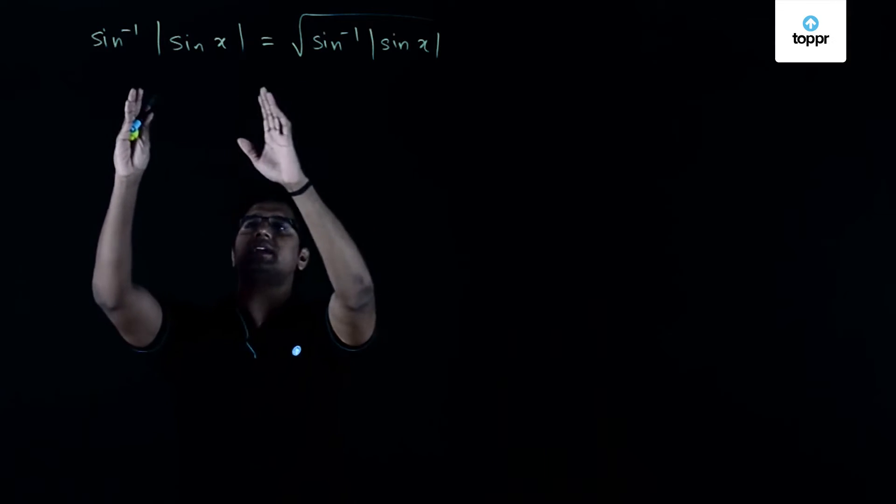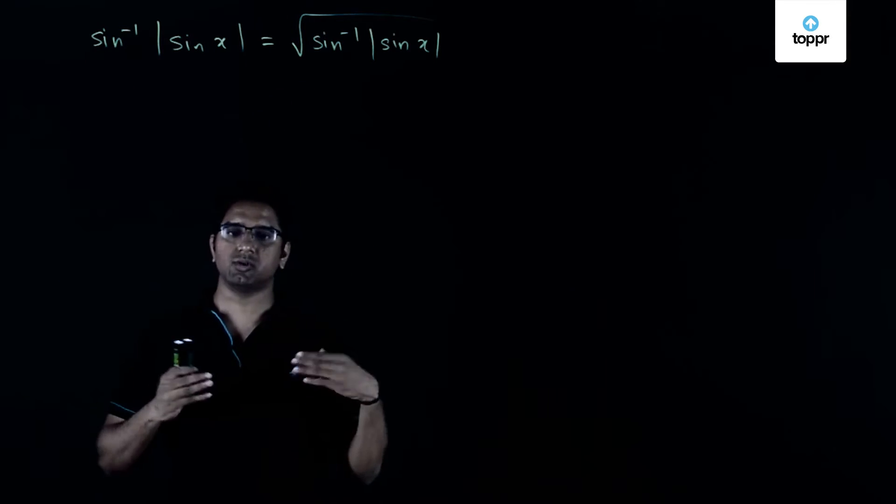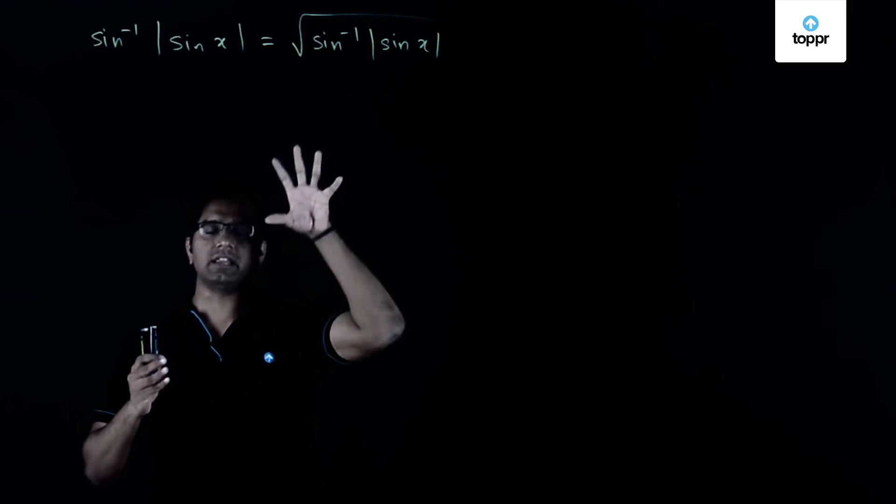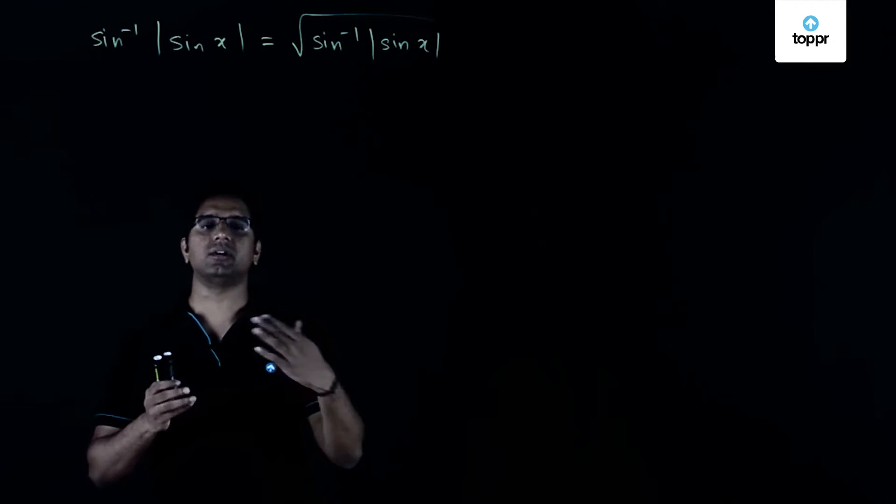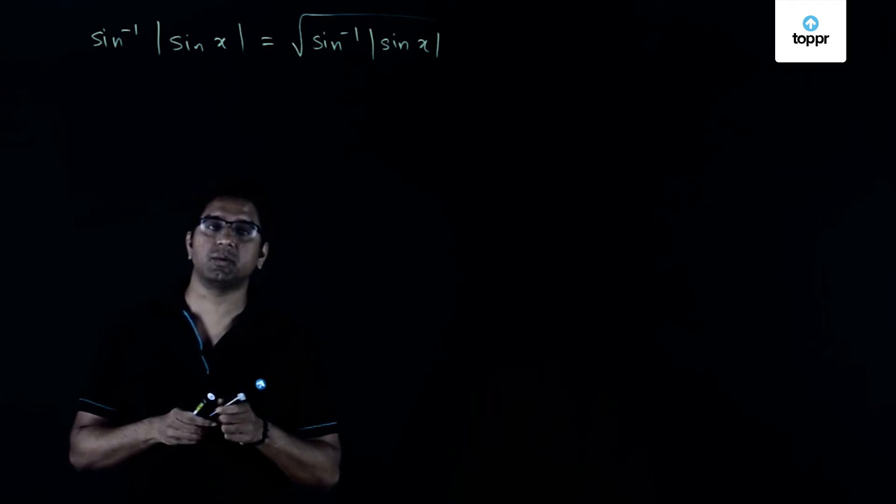For example, we can take sine inverse of mod sine x to be equal to y. Then this entire equation basically reduces to y equals root y. So that is the first step to be done.